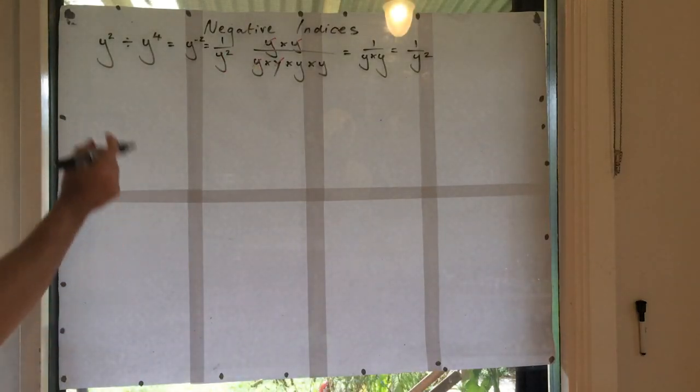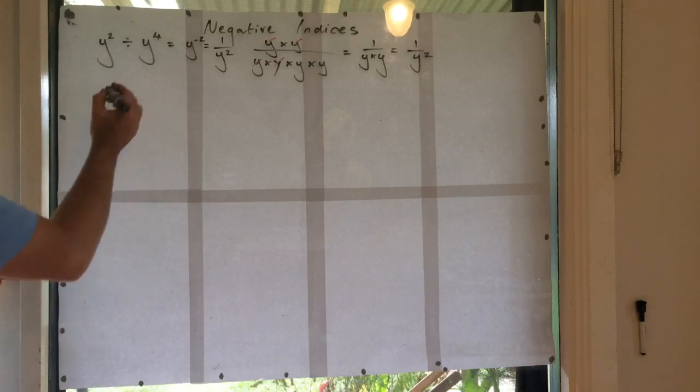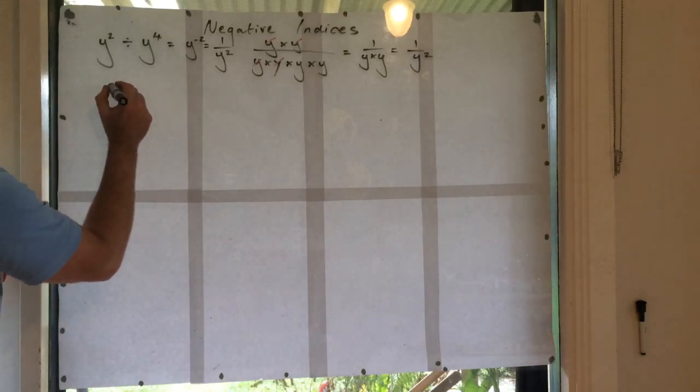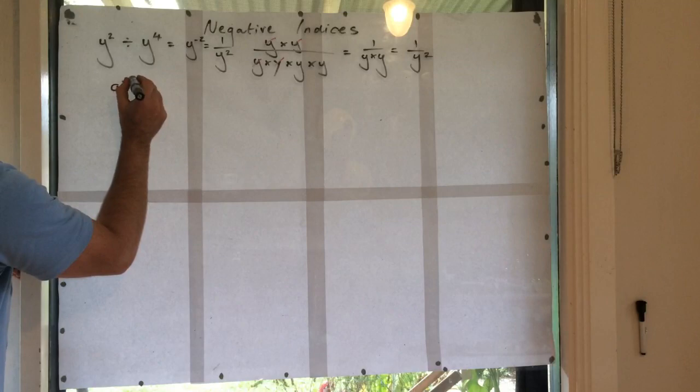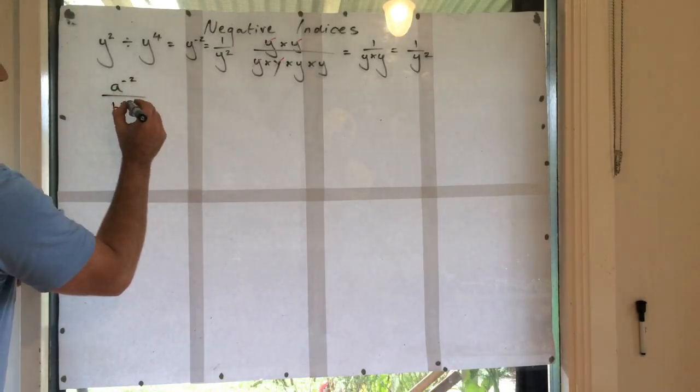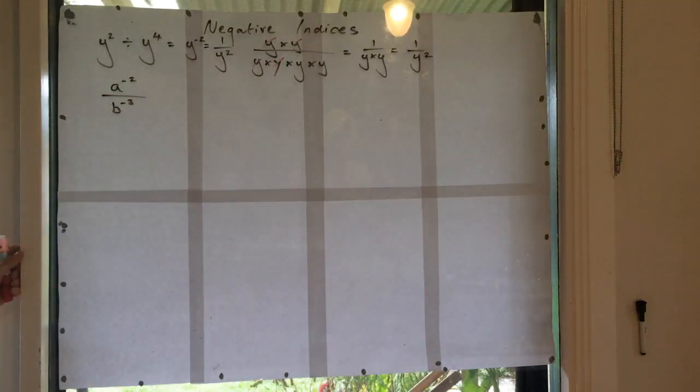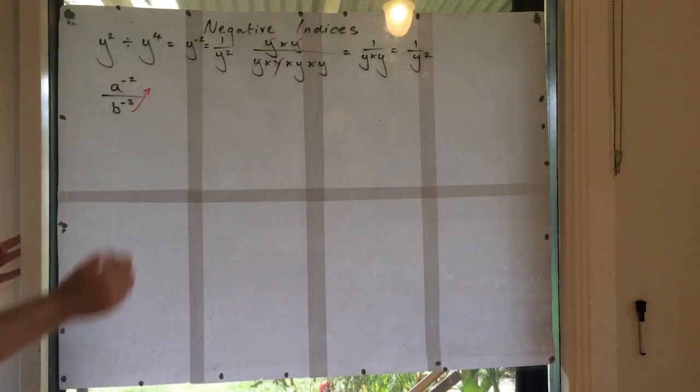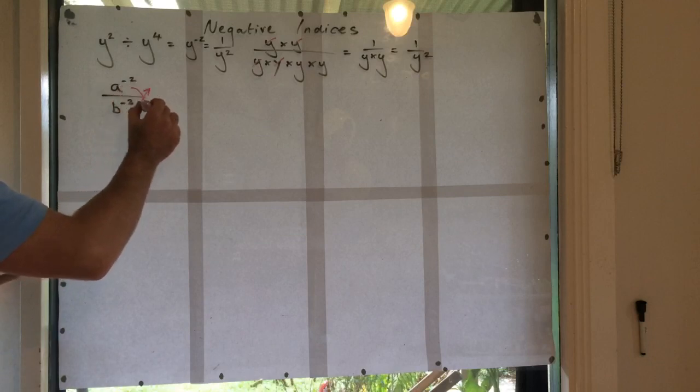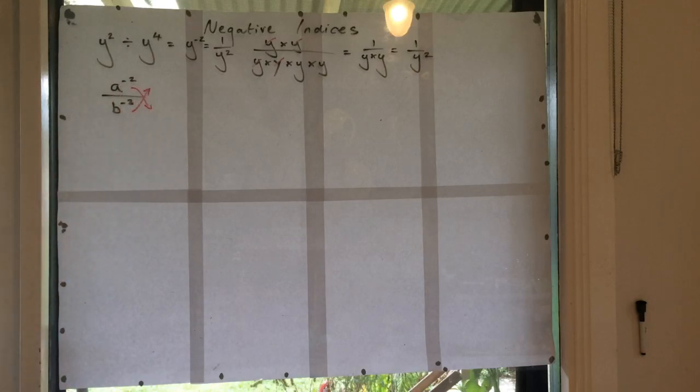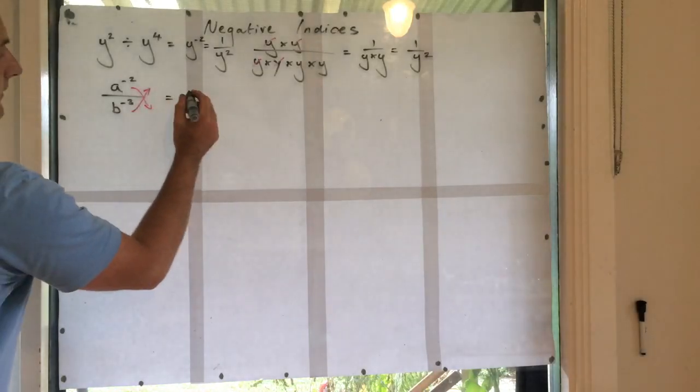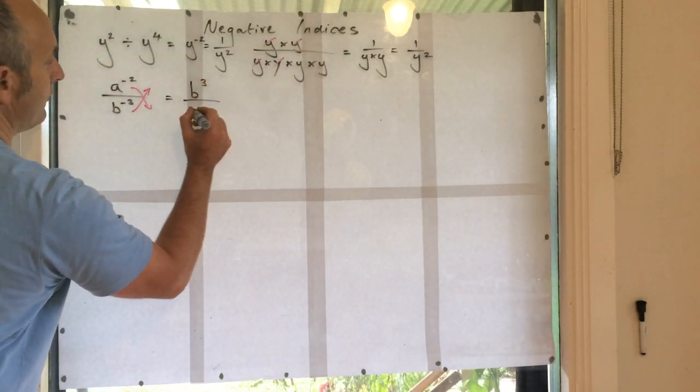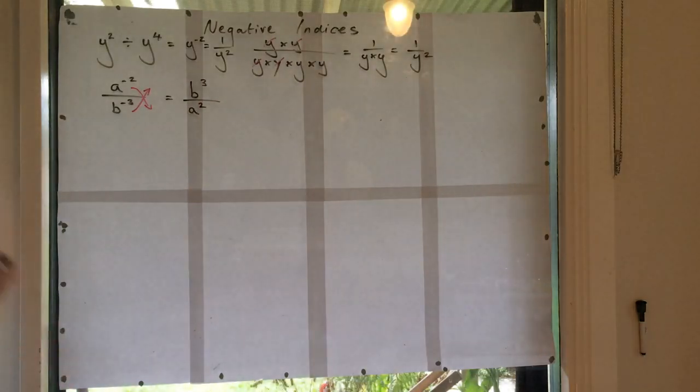Okay, so now I start to say, well hang on, what else can we do? So if I've got something like this, a to the negative 2 over b to the negative 3, and I say I don't want to have any negative indices, I only want positive indices. So what I do is I move the b to the negative 3 up to the numerator, and the a to the negative 2 down to the denominator. So in this case, I'm going to be left with b to the 3 over a to the 2. Can you see the difference?